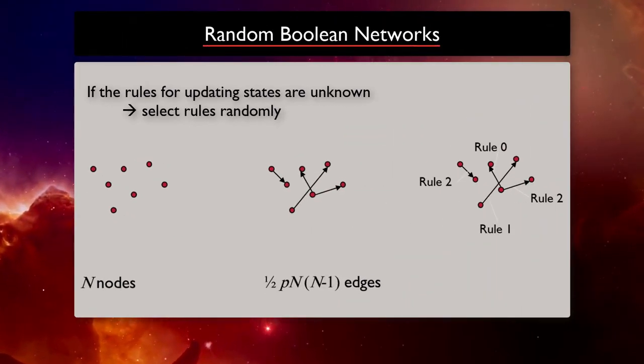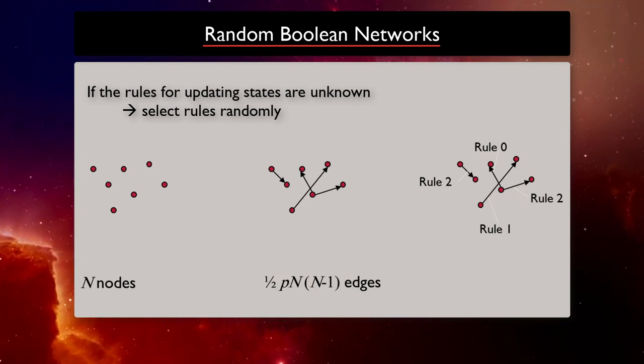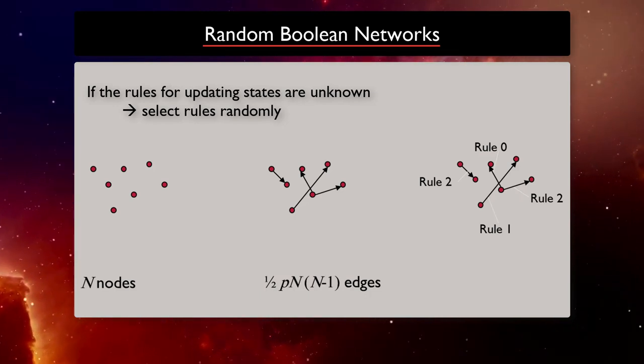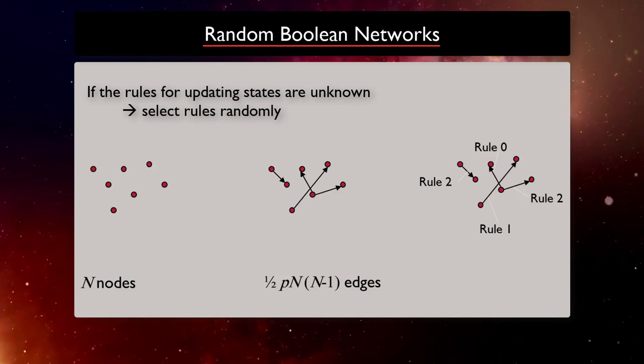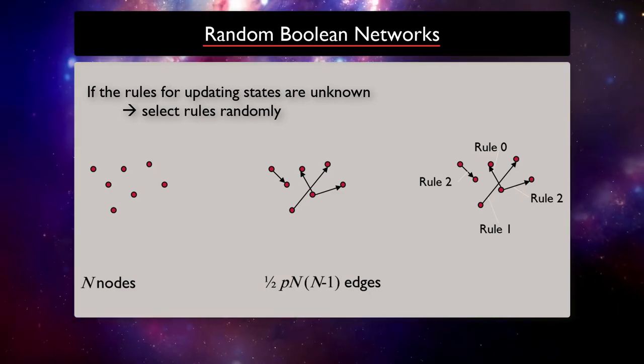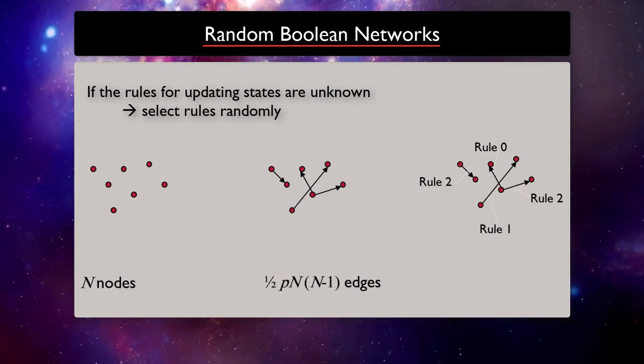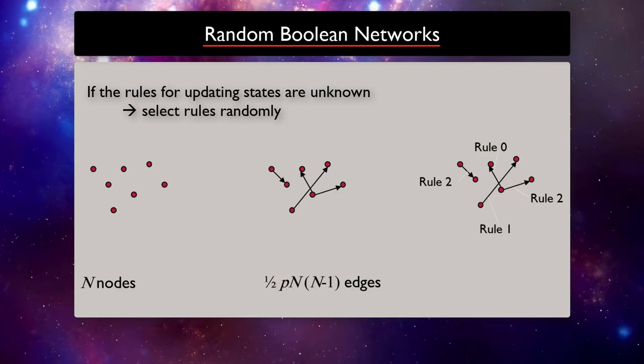As we said, for a boolean network, we need both rules and a structure. So if we start with a set of nodes, then we need to connect them randomly to have random networks. But then, if the rules for updating states are also unknown, we need to select the rules randomly.